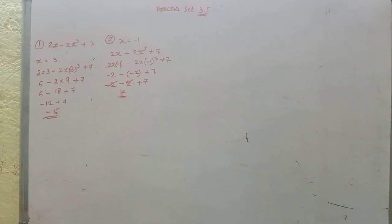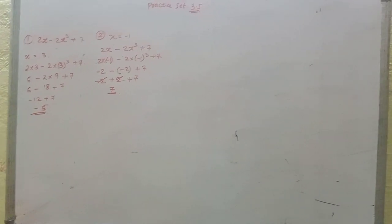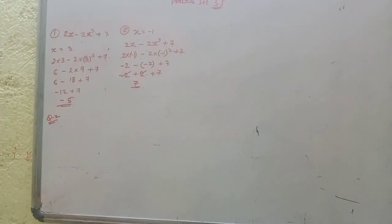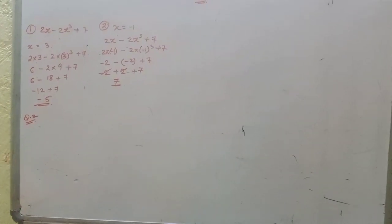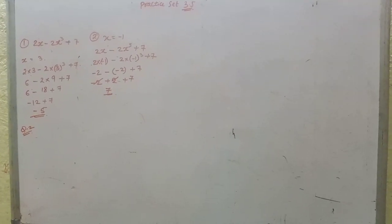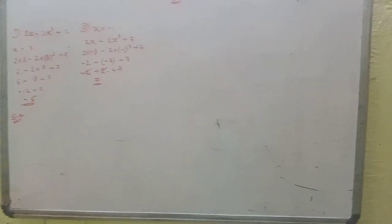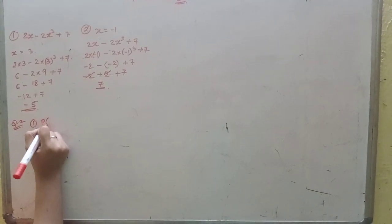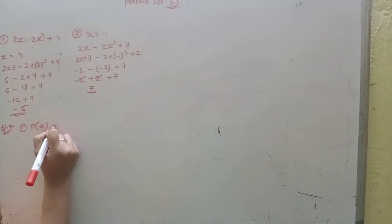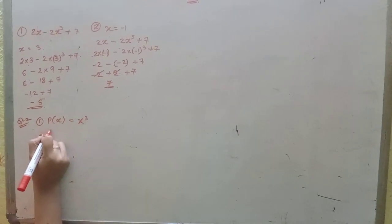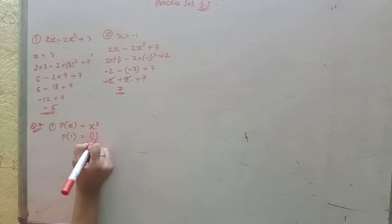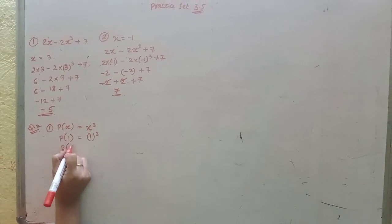-2 minus -2 plus 7. Minus minus cancel, so -2 plus 2 plus 7 equals 7. Understood? Second question: for each of the following polynomials, find P(1), P(0), and P(-2). P(x) = x³, so P(1) = 1³ = 1 only.